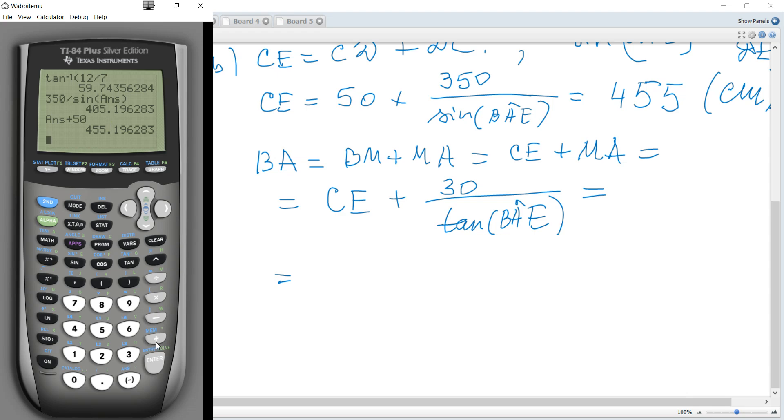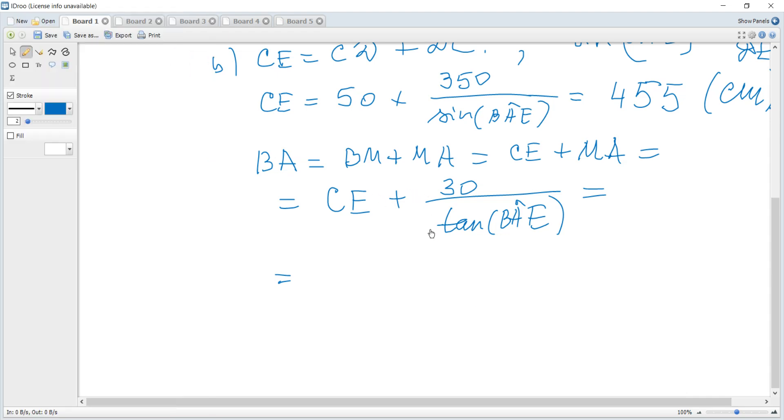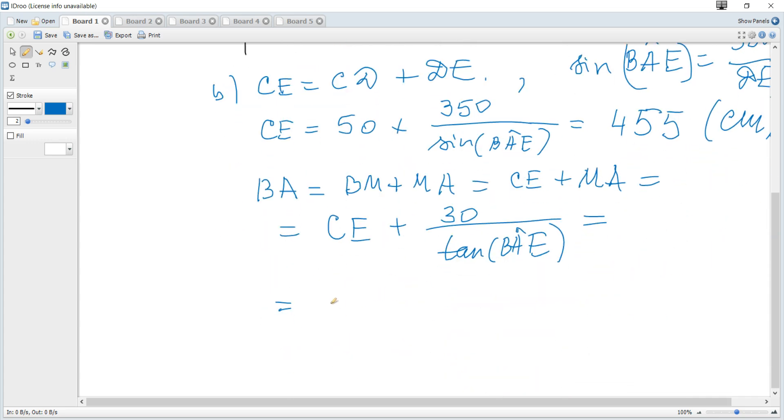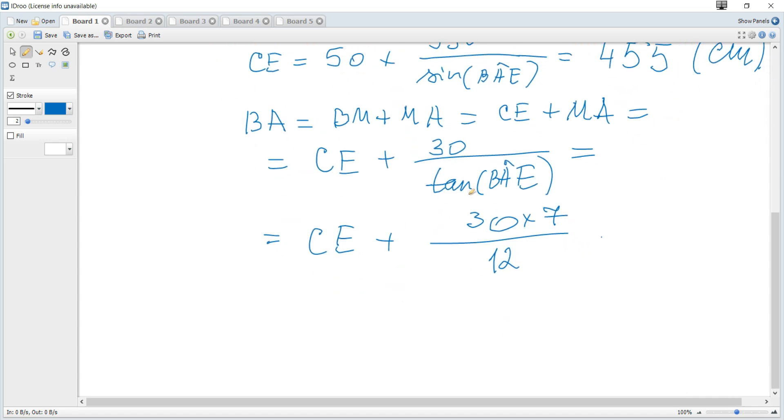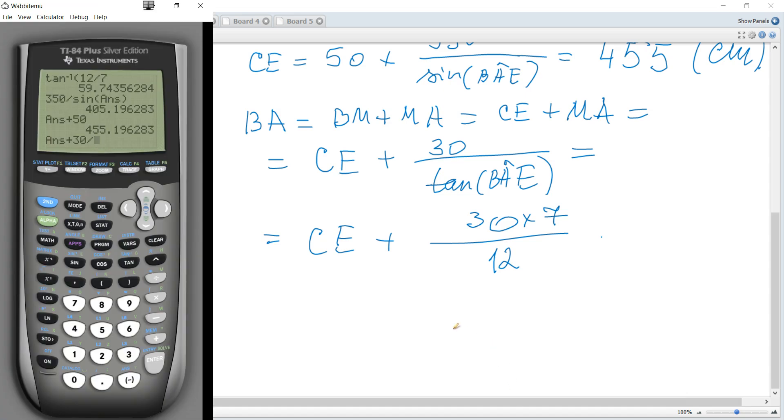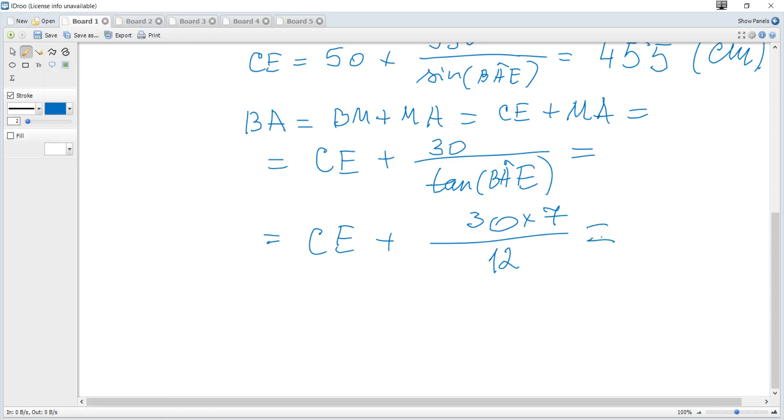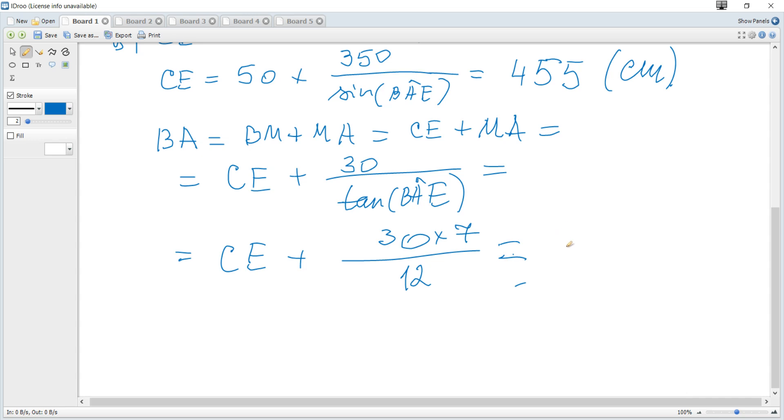It's the answer plus 30 divided by tangent of BAE. But tangent of BAE is directly 12 over 7, which equals 473 centimeters to three significant figures.